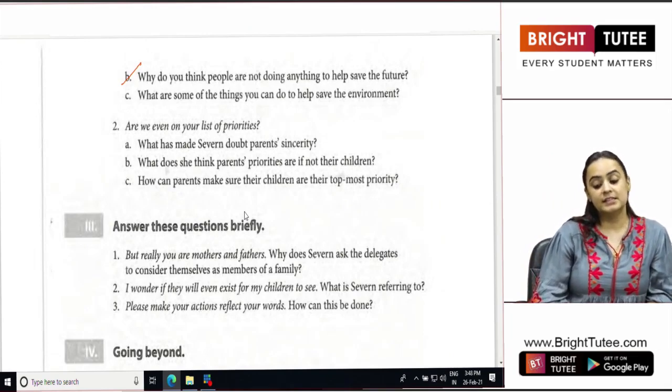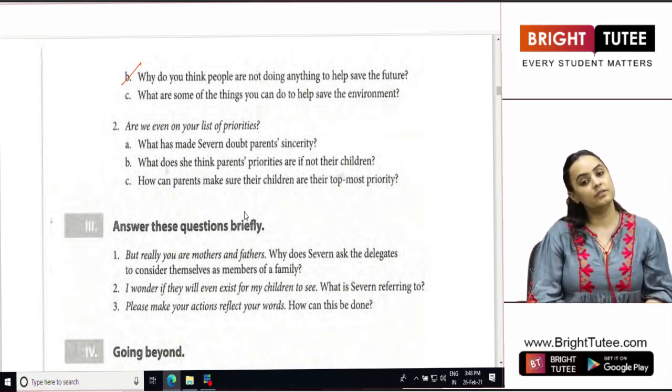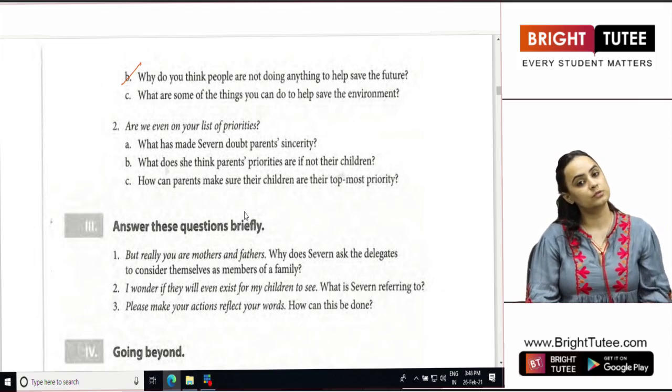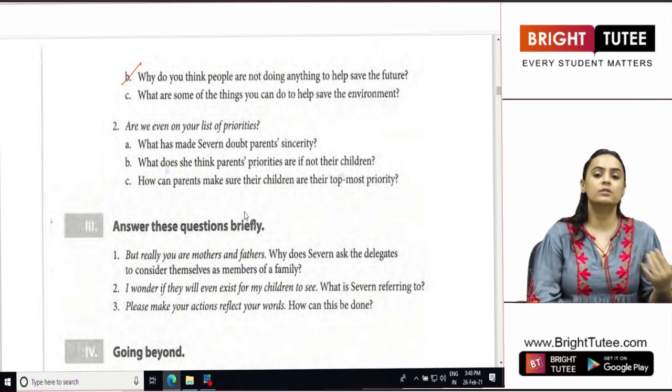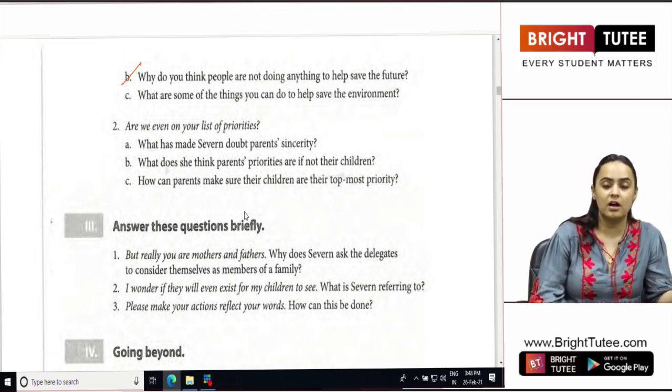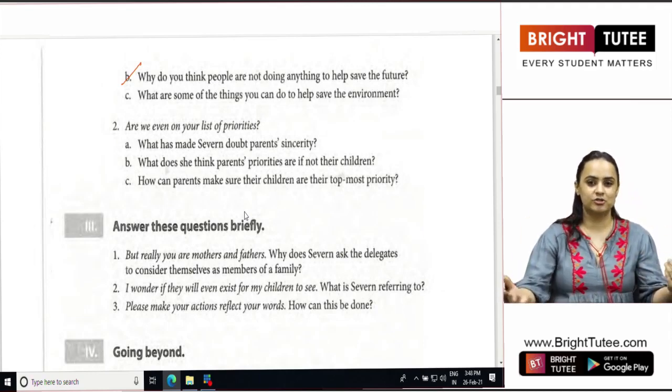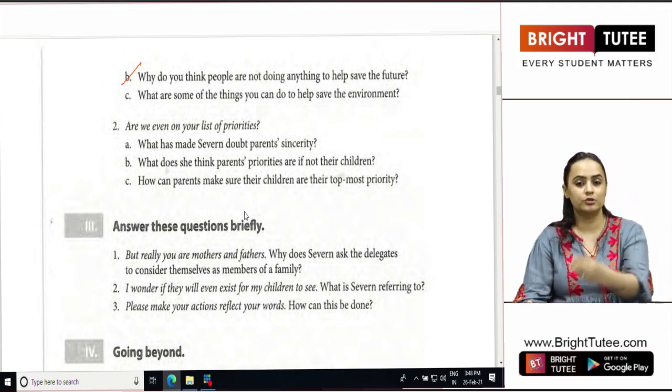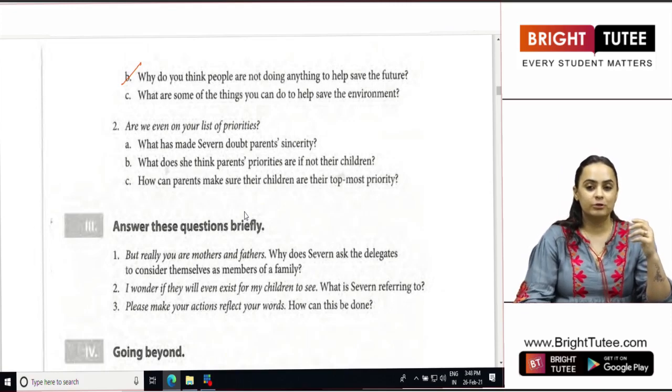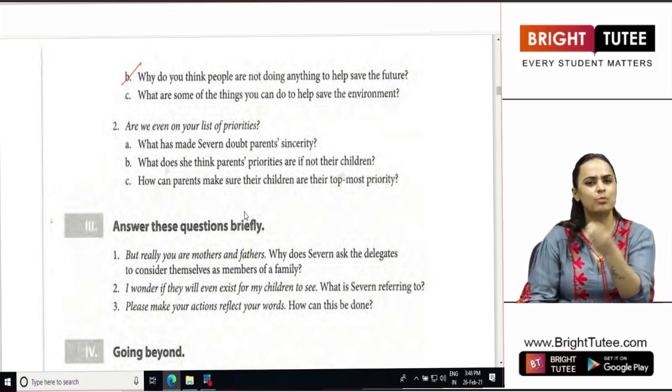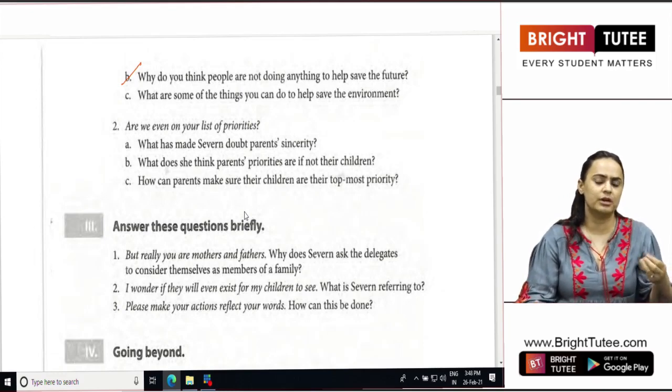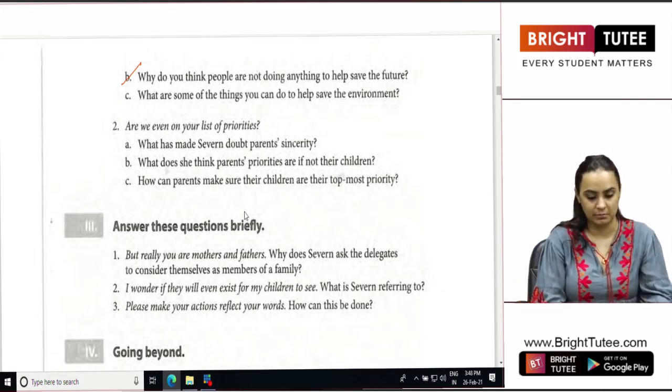What are some of the things you can do to help save the environment? So what can you do to save the environment? There are a lot of things that we can do to save the environment: growing more trees, taking care of the animals, having proper planting trees in our surroundings, watering them and taking care of our nature. These are very small gestures that can bring about a big and drastic change in the environment.